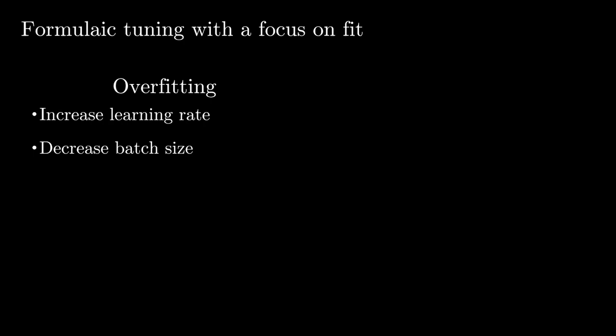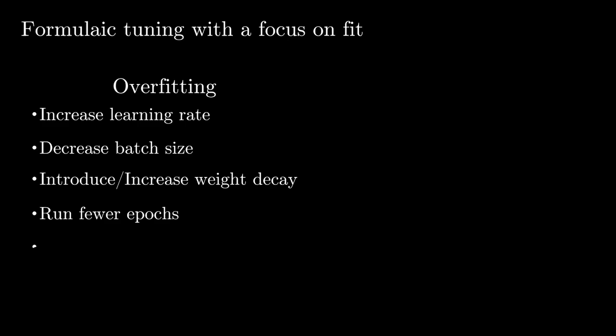For a more formulaic approach to tuning, if our generalization error, that is, difference between training and validation loss or metric score is low, we may be underfitting. Conversely, if our generalization error is high, we may be overfitting. If we're overfitting, we likely want to start with regularizing. This generally should be in the form of increasing learning rate, decreasing batch size, introducing weight decay, running fewer epochs, reducing network capacity, or introducing dropout. If we're underfitting, we likely want to either increase the complexity of our network, reduce regularization, or just run our network for more iterations.